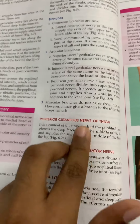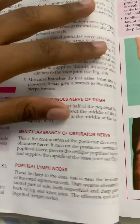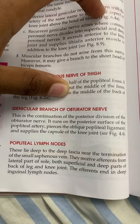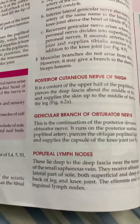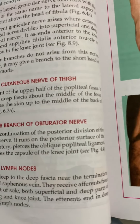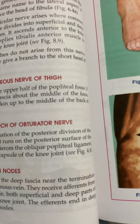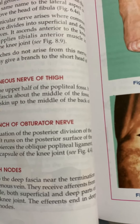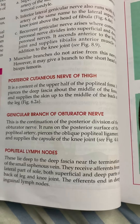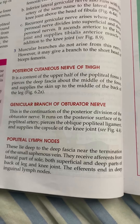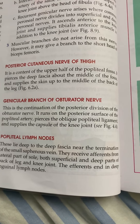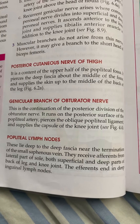The popliteal lymph nodes are six in number. They lie deep to the deep fascia near the termination of the small saphenous vein. According to Datta, some are located at the junction where the popliteal vein is joined by the small saphenous vein, and on either side of the popliteal vein. They receive afferents from the lateral part of the sole and both superficial and deep parts of the back of the leg and knee, and drain into the deep inguinal lymph nodes.